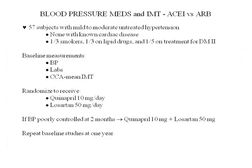At baseline, you measure their blood pressure, labs, and intermediate thickness — the mean thickness of the common carotid artery done in the office. Then you randomize these untreated hypertensives to quinipril, an angiotensin-converting enzyme inhibitor, and losartan, an angiotensin receptor blocker. If after two months their blood pressure was not well controlled, they were switched to combination therapy. Then you repeat the baseline parameters at one year.